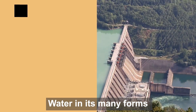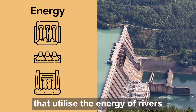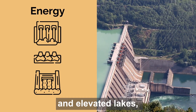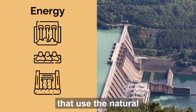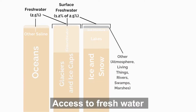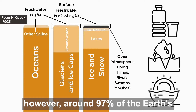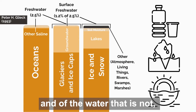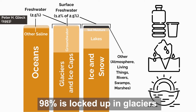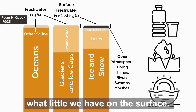Water in its many forms can also be used to produce renewable electricity, from hydroelectric dams that utilise the energy of rivers and elevated lakes, to tidal and wave generation that use the natural movements of the ocean. Access to fresh water may seem a given; however, around 97% of the earth's water is in fact salty, and of the water that is not, 98% is locked up in glaciers and groundwater, emphasising the need to protect what little we have on the surface.